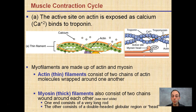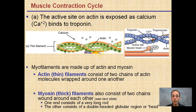Let's look at this process in five basic steps. Step one: the active site on actin is exposed as calcium ions bind to troponin. We can see our tropomyosin, our troponin, and here's our calcium. The myosin can only bind to this complex. Our myofilaments are made up of actin — the green or blue circles representing the thin filaments, consisting of two chains of actin molecules wrapped around one another — and myosin.